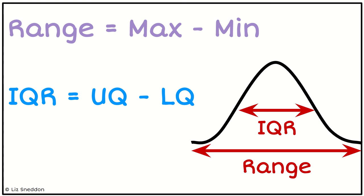So the range is looking at how spread out the whole data set is, from the biggest to the smallest. So to calculate it, we do our maximum value minus our minimum.